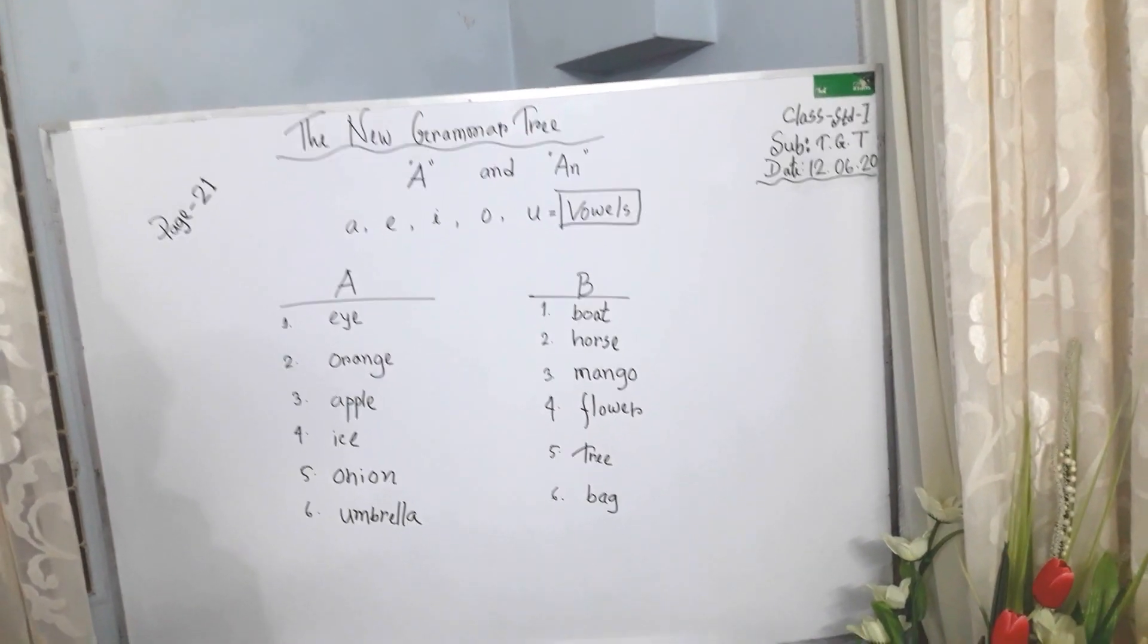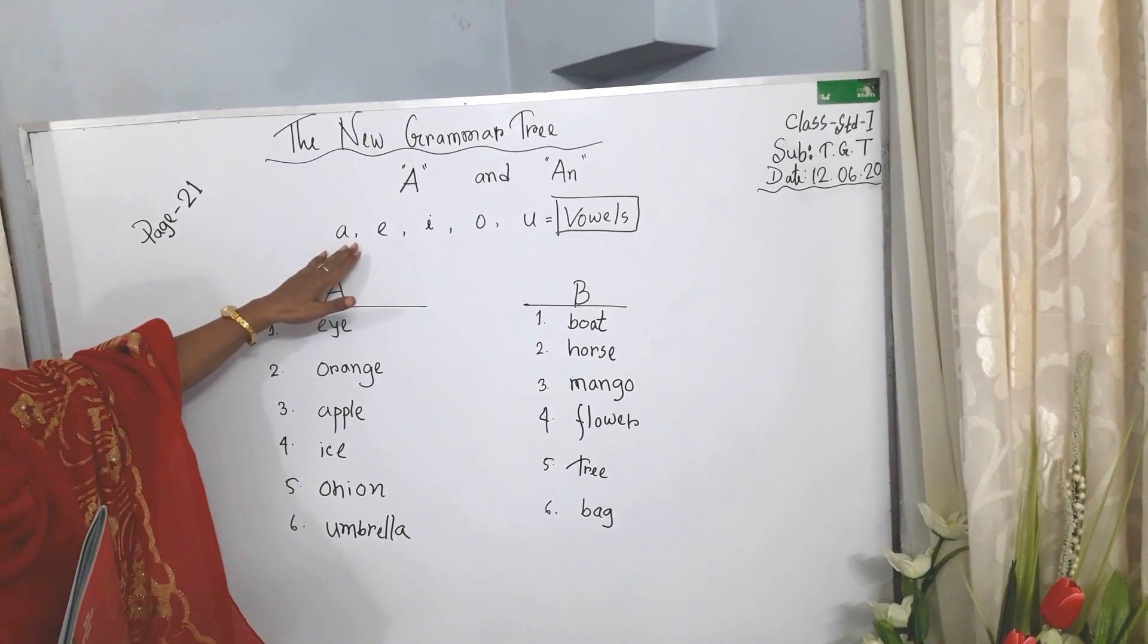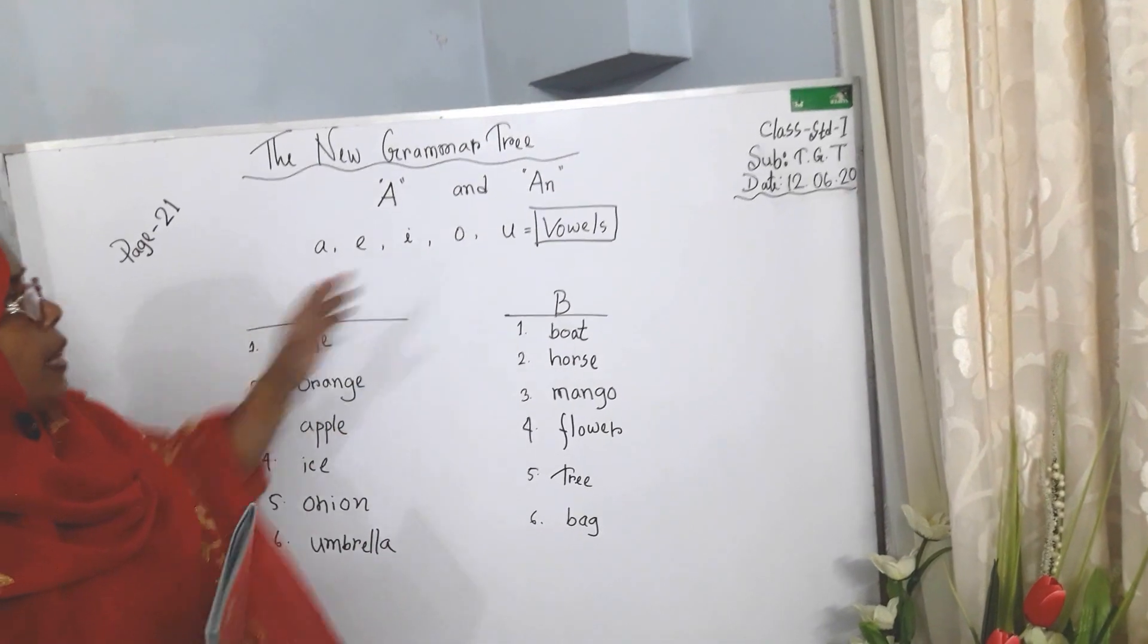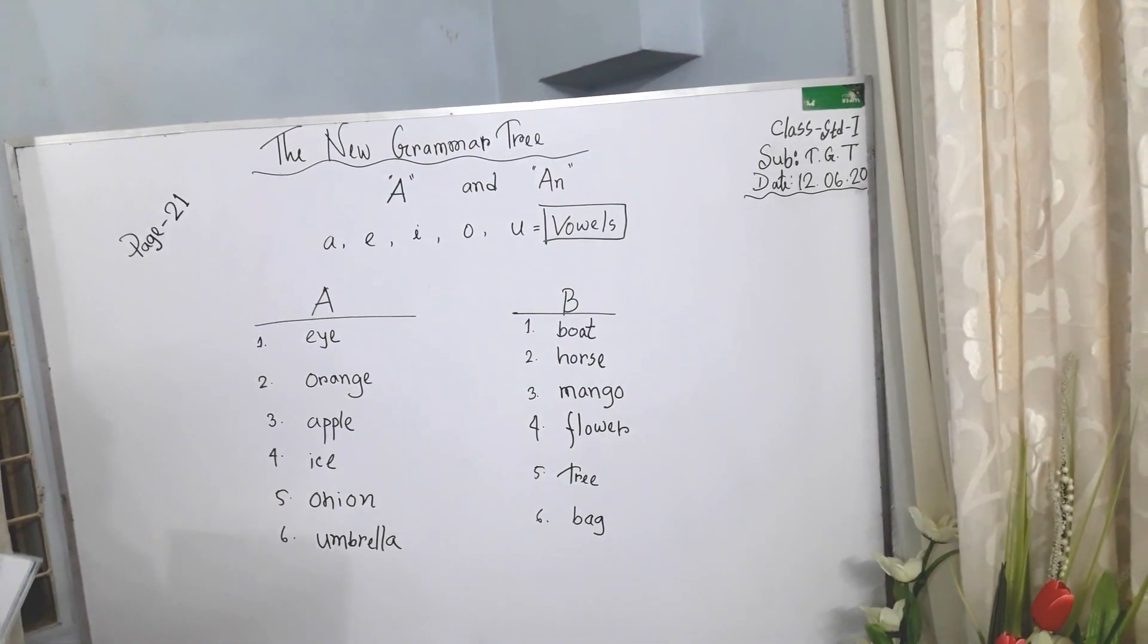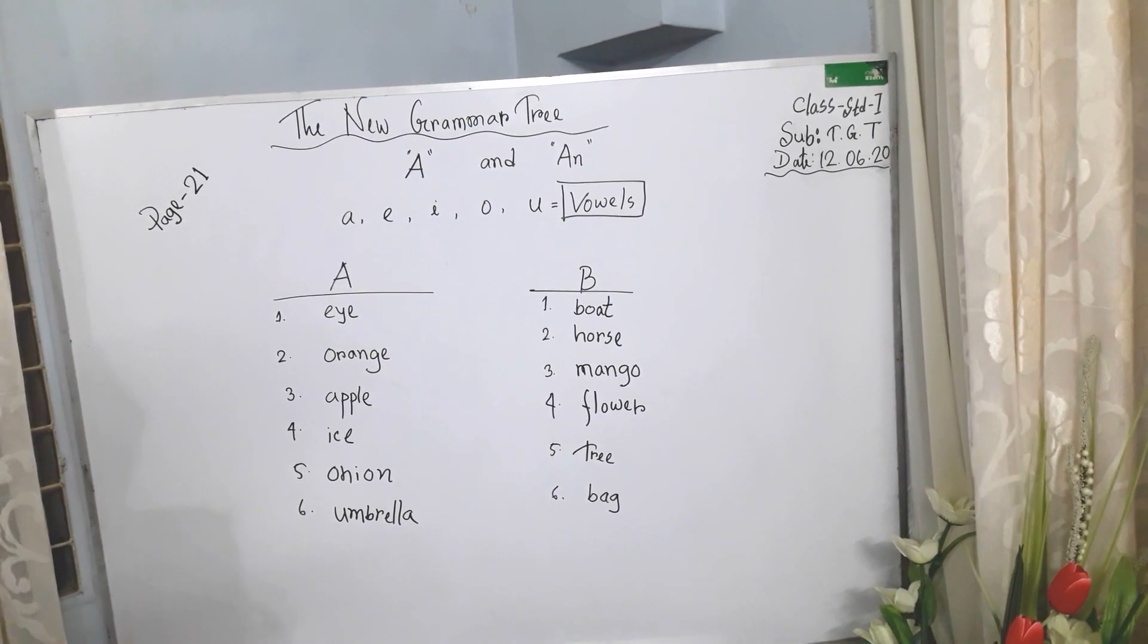Look at the board. There are five alphabets: A, E, I, O, U. These five letters are vowels. These five letters are called vowels.